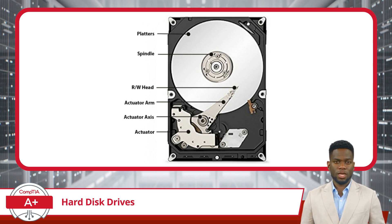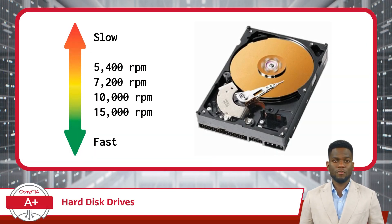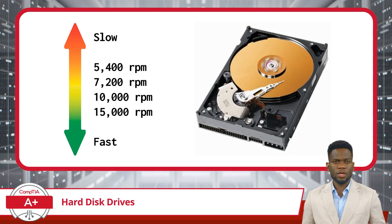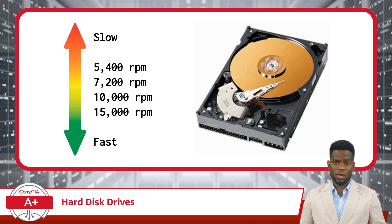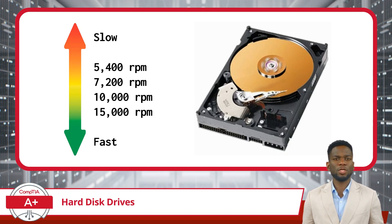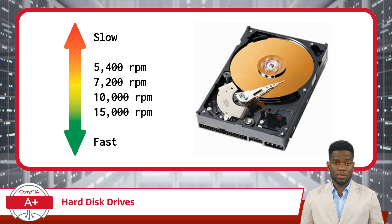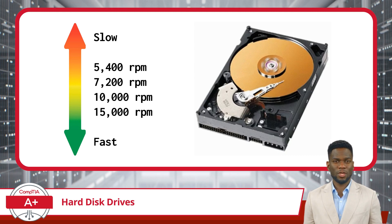Keep these devices away from strong magnets, as they could seriously damage an HDD. Now that we know how an HDD works, let's talk about read and write speeds. The speed of the rotating platter in a hard disk drive is measured in revolutions per minute, or RPM. This measurement indicates the number of full rotations the disk completes within a minute, and it serves as a critical factor in determining the performance of the HDD, directly influencing its read and write speeds.